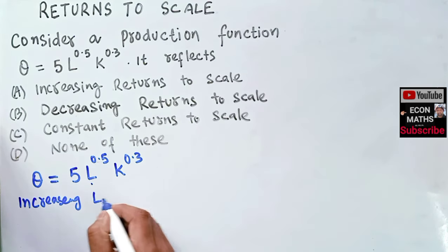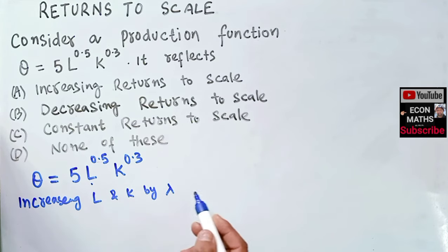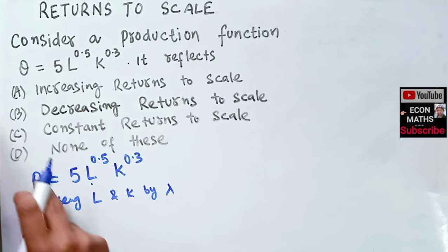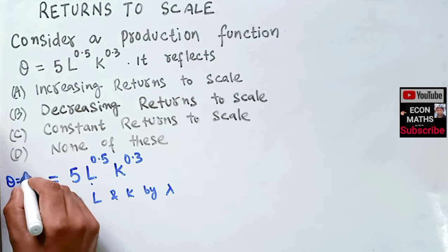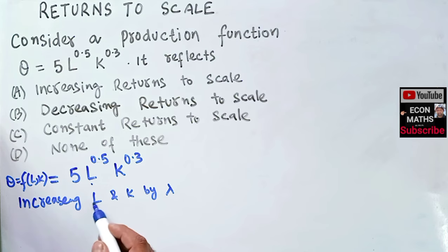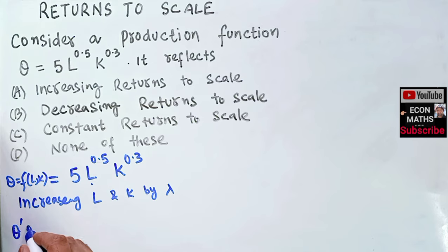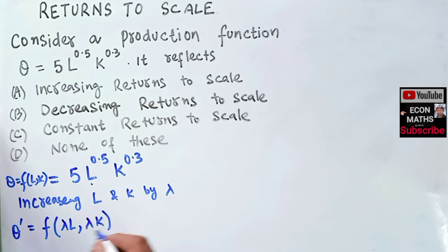We are increasing labor and capital by lambda in this function. So if Q is a function of labor and capital, and we increase both by lambda, then our new production function Q' will equal F of lambda-L and lambda-K, because we are increasing both labor and capital by the same factor lambda.